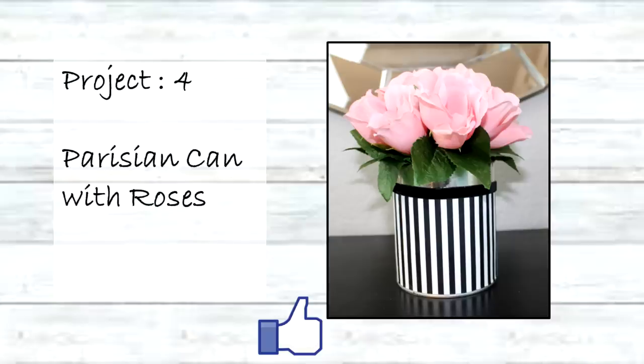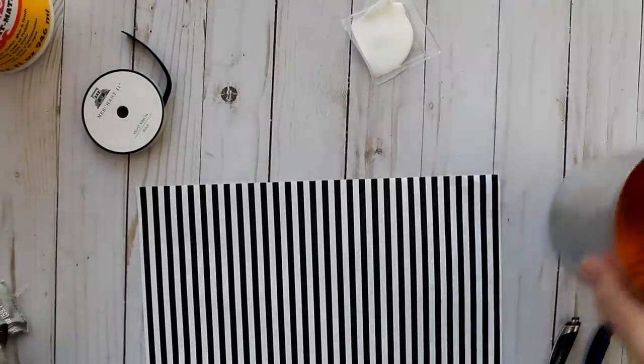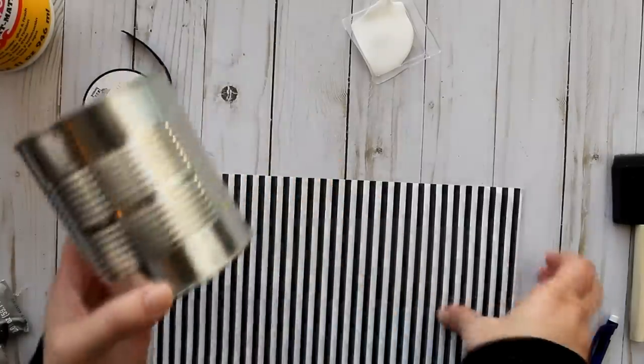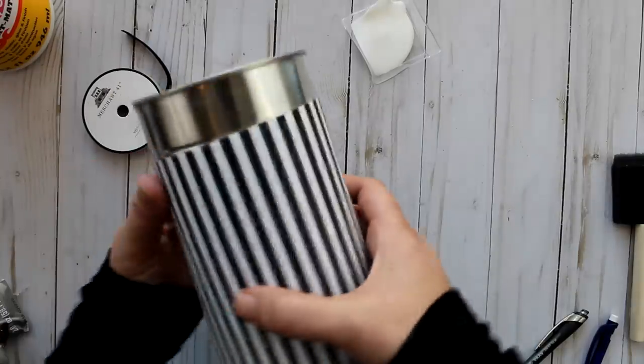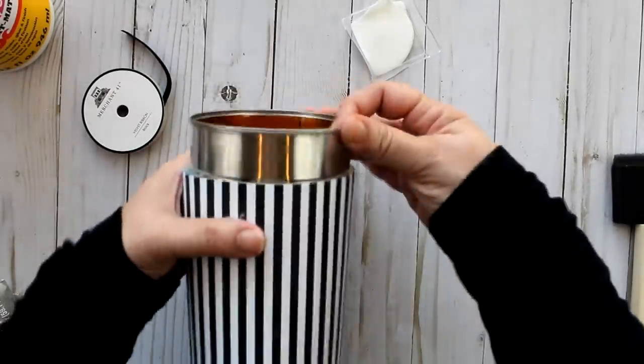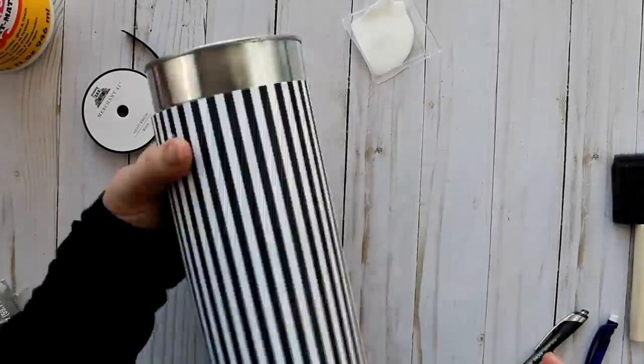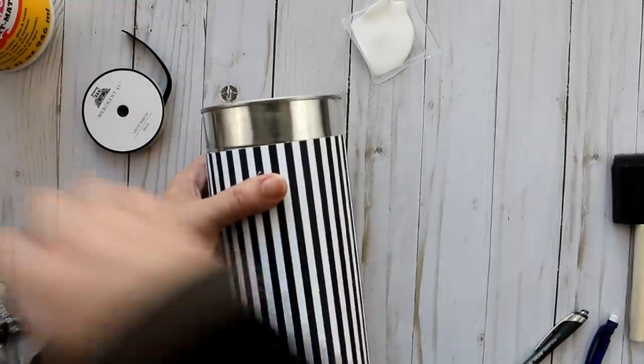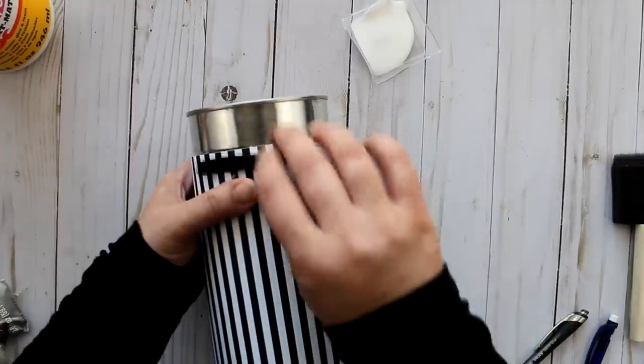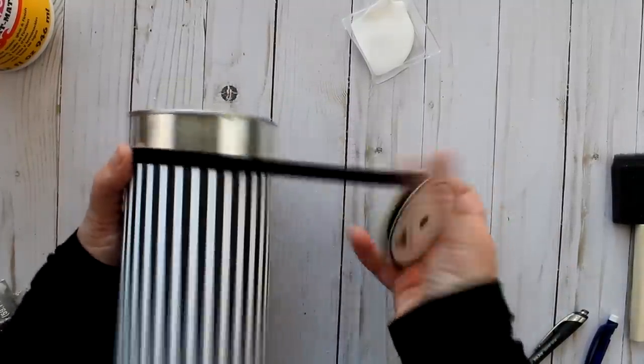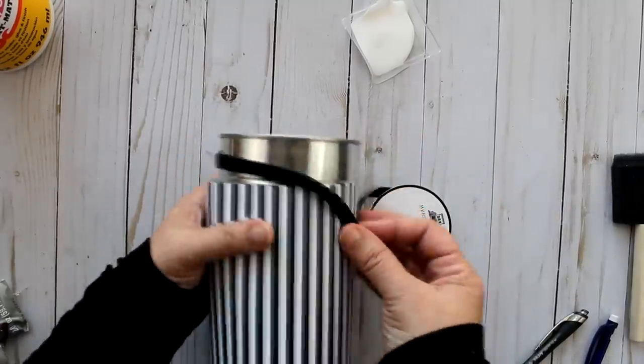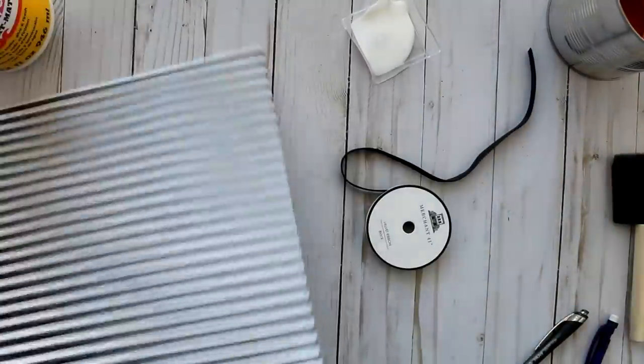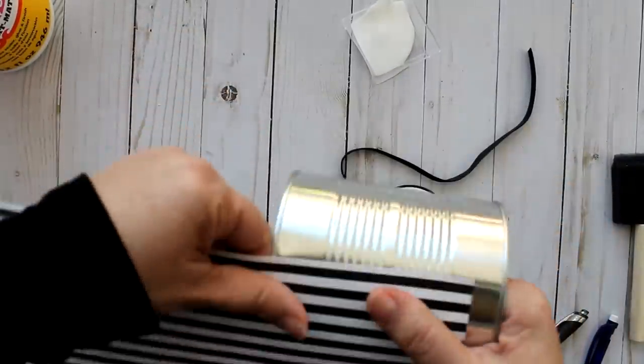Finally we have this Paris inspired can with roses. To make the container I'm going to recycle this 28 ounce can of tomatoes and I'm going to do that by adding some of this scrap paper from Hobby Lobby to the bottom portion. I do want to leave a little bit of that silver peeking out and then I'm also going to use some of this velvet ribbon from Hobby Lobby and that's going to go in between the paper and the can.